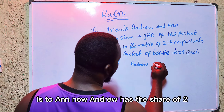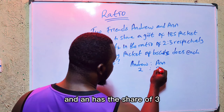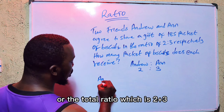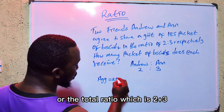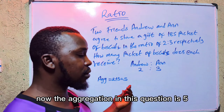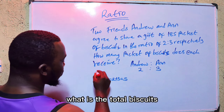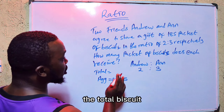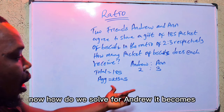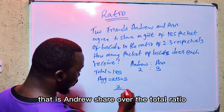When using ratio to share things between two people or communities, here is a question: share 60 naira in the ratio of 2 is to 3. I'm sharing this with two persons — I'll call them A and B. So I'm sharing this 60 naira between these two persons.